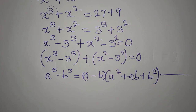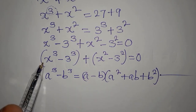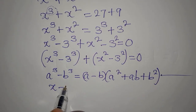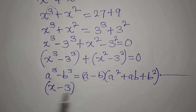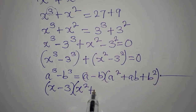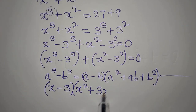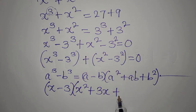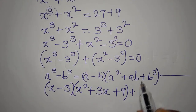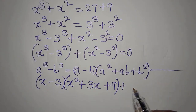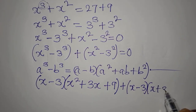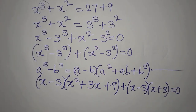Our a is x and our b is 3, so a minus b becomes (x minus 3), and a² plus ab plus b² becomes (x² plus 3x plus 9). Then the difference of two squares gives us (x minus 3)(x plus 3), and everything equals zero.